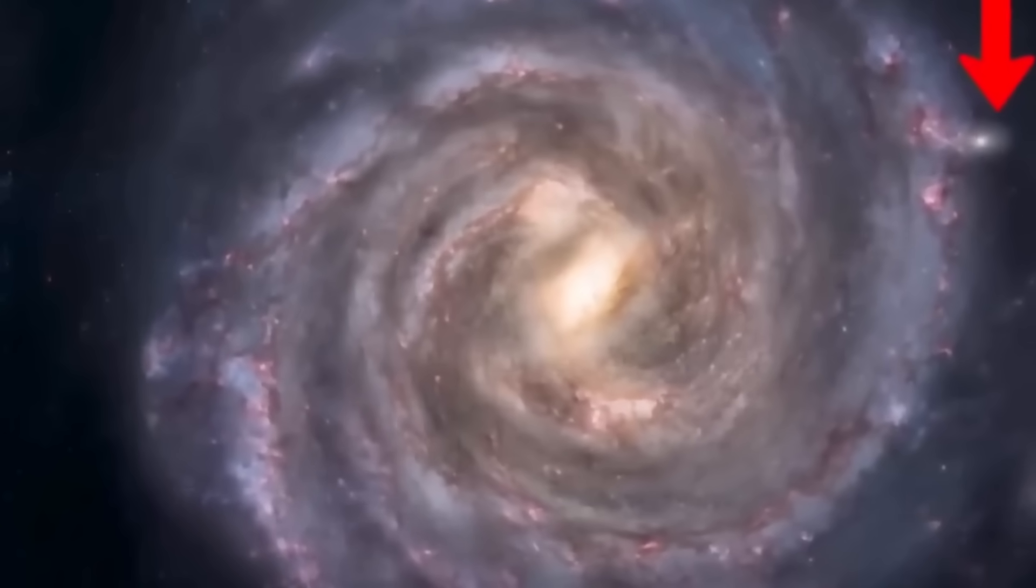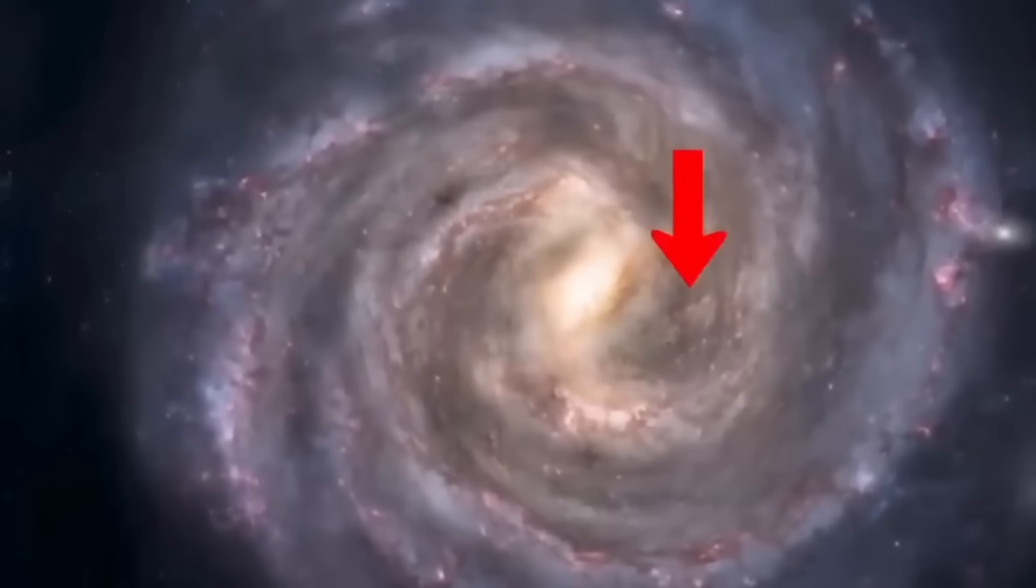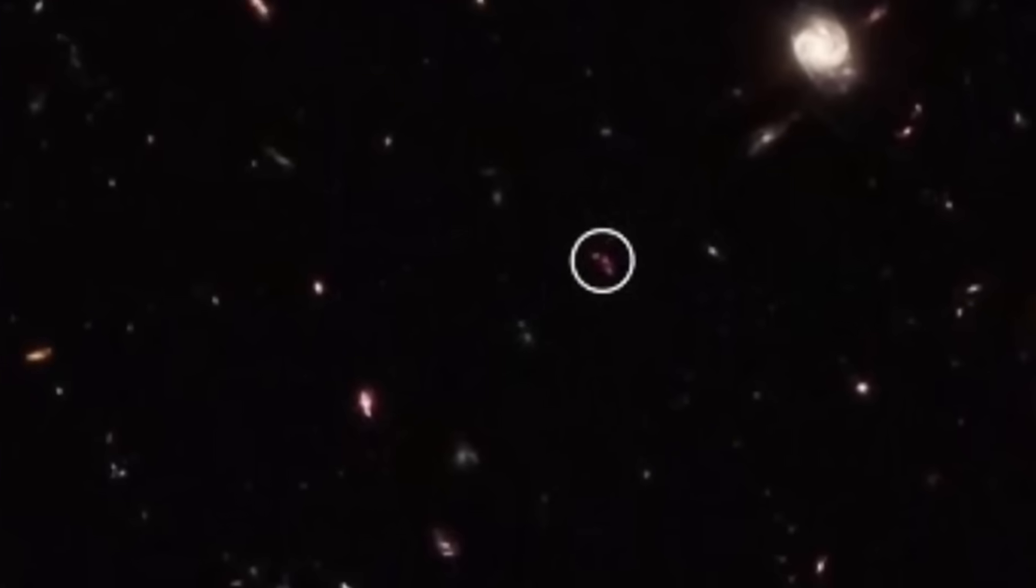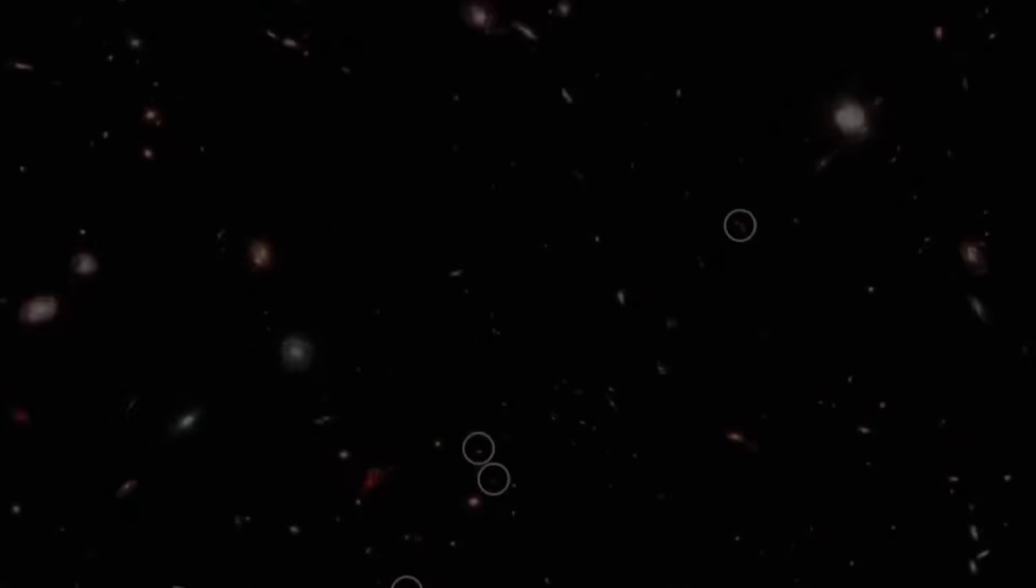And the very laws that governed expansion, time, and matter began to unravel under the scrutiny of Webb's infrared vision. The deeper it looked, the more reality fell apart, until one by one scientists began to whisper a terrifying idea: What if everything we've been taught about the origin of the universe is wrong?